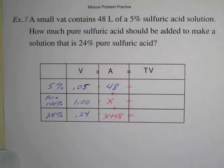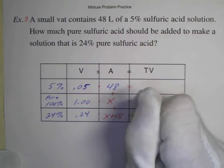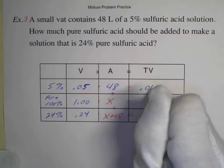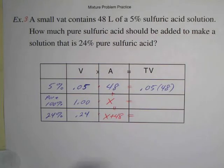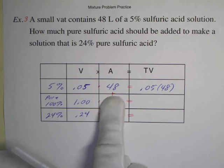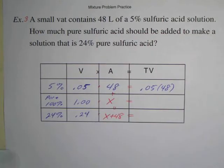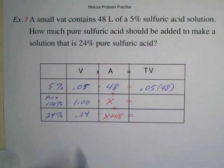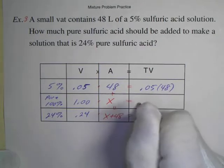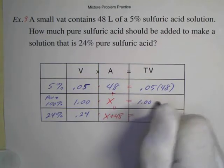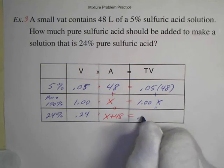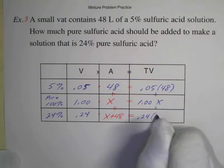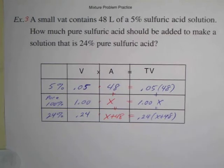And once you have those two boxes, we just multiply across. And the first box we can multiply across. So we have 0.05 times 48. So all that you could have done just by reading the problem, and then you just have to fill in these two boxes. And once you have those, now you can multiply across and we've got 1.00 times x, and these add down. And this would be 0.24 times x plus 48. And there's your equation.